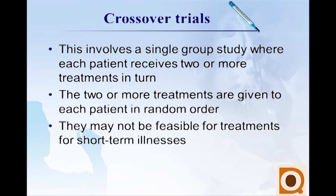The two or more treatments are given to each patient in turn and it has to be randomized. Crossover trials are very useful for chronic conditions such as pain relief in long-term illness or the control of high blood pressure, where the outcome can be assessed relatively quickly. They may not be feasible for treatments for short-term illness or acute conditions that, once treated, are cured.